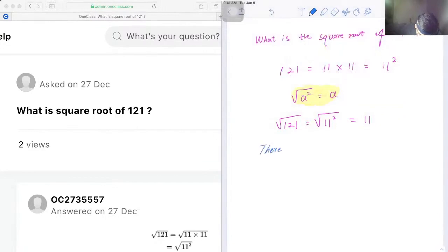Now we just need to write the conclusion. Therefore, the square root of 121 is 11.